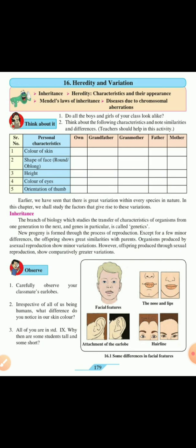Color of the eyes. Orientation of the thumb. How you can rotate your thumb, move your thumb. So here you include everything, write it, fill in these boxes and note down the differences. Now earlier we have seen that there is a great variation. Variation means differences or variety within each species in nature. In this chapter, we shall study the factors that give rise to these variations.